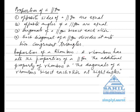Properties of a rhombus. A rhombus has all the properties of a parallelogram. The additional property of a rhombus is that the diagonals of a rhombus bisect each other at right angles.